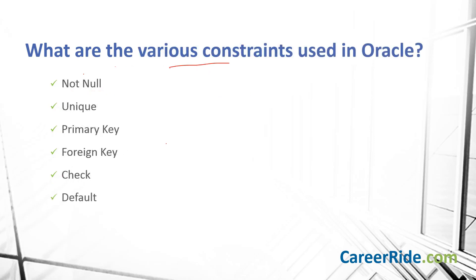What are the various constraints used in Oracle? A constraint restricts the values in a database. We have six types of constraints in Oracle: NOT NULL, UNIQUE, PRIMARY KEY, FOREIGN KEY, CHECK, and DEFAULT.